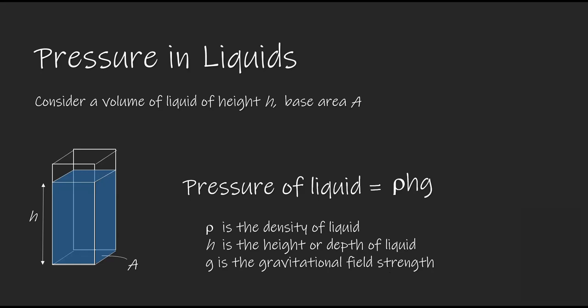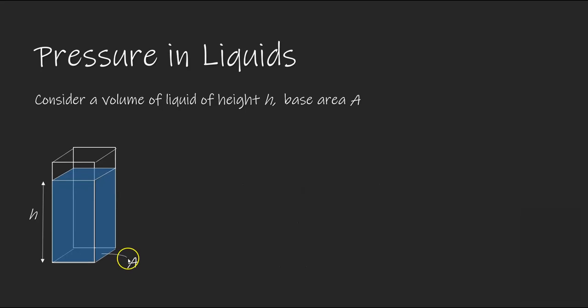Let's see why this is so. First, we know that the volume of the liquid V is given by h times A. We have also learned that the density of liquid is mass divided by volume.